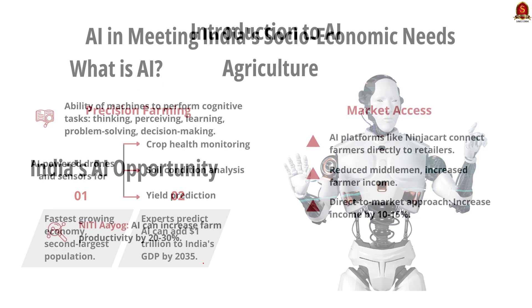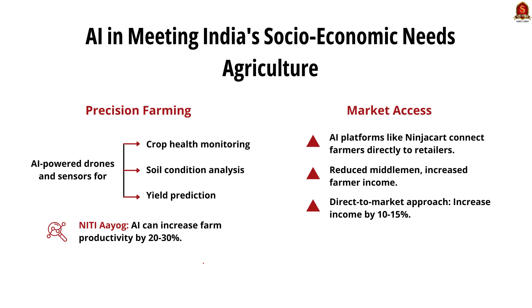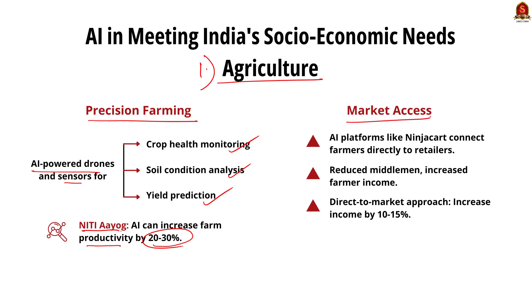In the body part of the answer, address how AI can aid in India's socioeconomic development. First is agriculture: AI is used in precision farming — AI-driven drones and sensors help in monitoring crop health, soil conditions and predicting yields. NITI Aayog reports suggest AI in agriculture can increase farm productivity by 20 to 30%. AI-based platforms like NinjaCart connect farmers directly to retailers, reducing middlemen and increasing farmers' income.